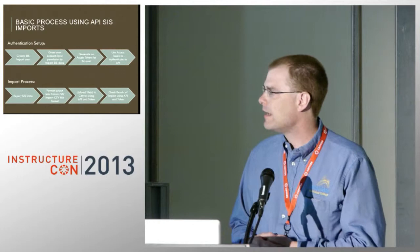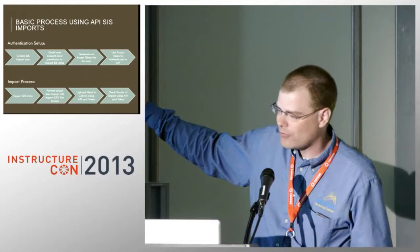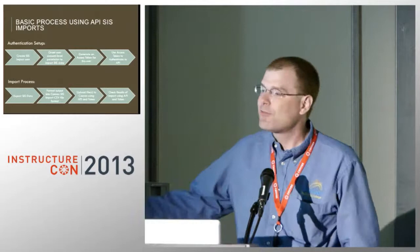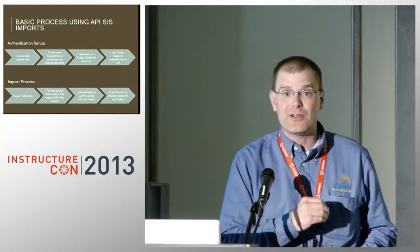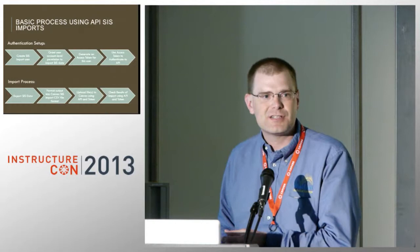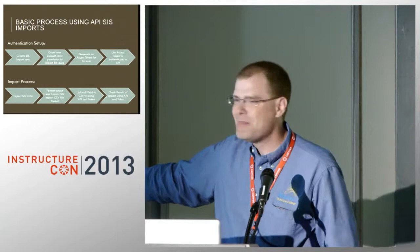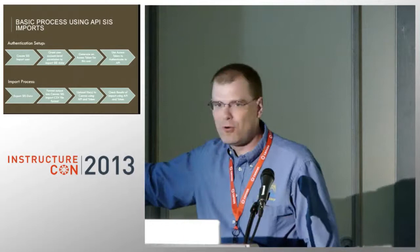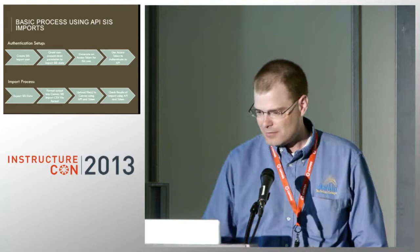Once we've got our account set up, we have to log on as that user at least once and generate an access token under the settings for that account. Make sure you store it in a safe place — you can only generate it once, or you have to create another access token. You're going to use that access token in whatever script you create to import your SIS data. Once authentication is set up, the process is pretty much the same: export data, format it into the appropriate file type, then upload the files. This time my script makes an API call — specifically SIS imports — to upload the file to Canvas. Then later on, I make another API call to verify the import succeeded.